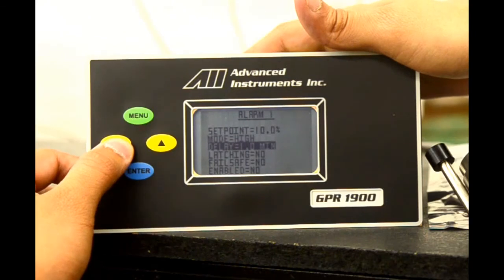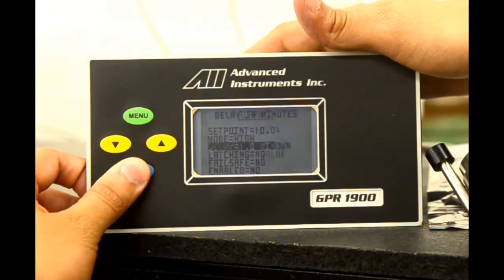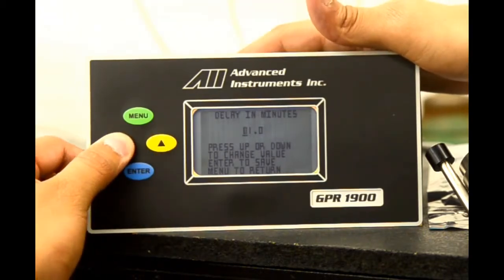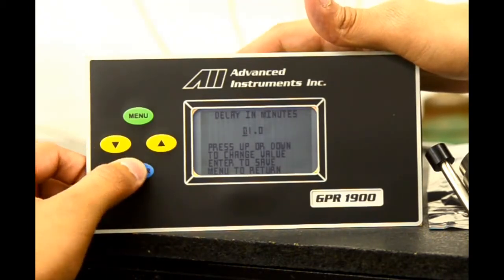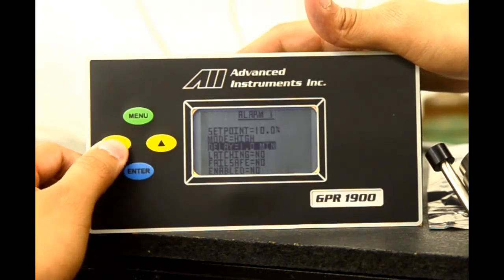We also have a delay function currently set at one minute. We select enter to change that value. The delay allows the analyzer to be under certain alarm conditions for the amount of minutes configured by the user before alarming. This is ideal to prevent false positives.